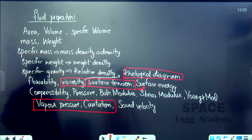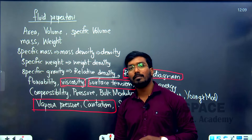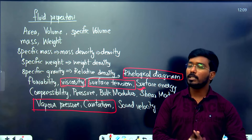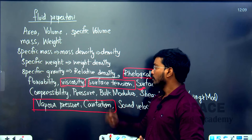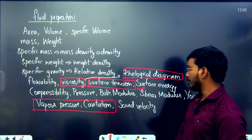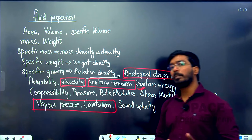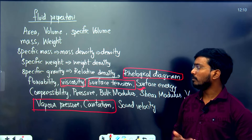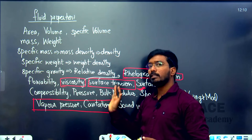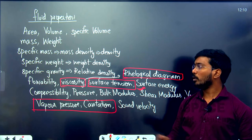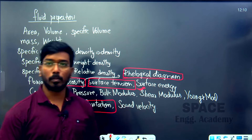Wherever you see this sort of question, do not miss it, because in GATE, ESE (Engineering Services Examination), TSPSC, APPSC, SSC JE, or any public service commission examination, if a question appears from fluid properties and introduction, these are the four properties to focus on most: viscosity, surface tension, rheological diagram, and vapour pressure/cavitation. Basic properties are always important and standard model questions will cover units and basic concepts as well.